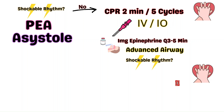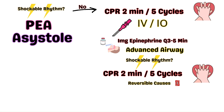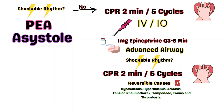Once the two minutes are up, perform another rhythm and pulse check. If the patient remains in a non-shockable rhythm, resume CPR again. At this point on the non-shockable pathway, start addressing the reversible causes: hypovolemia, hyperkalemia, acidosis, tension pneumo, tamponade, toxins, and thrombosis — the H's and T's.